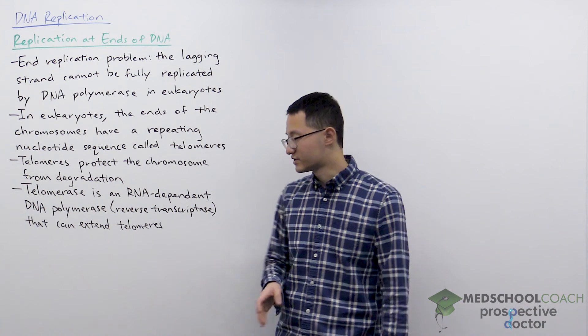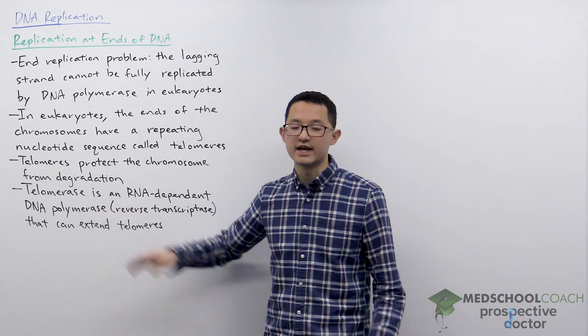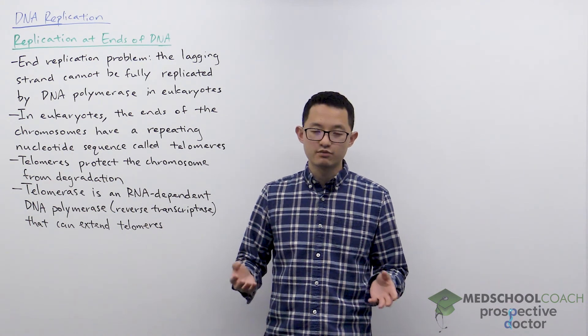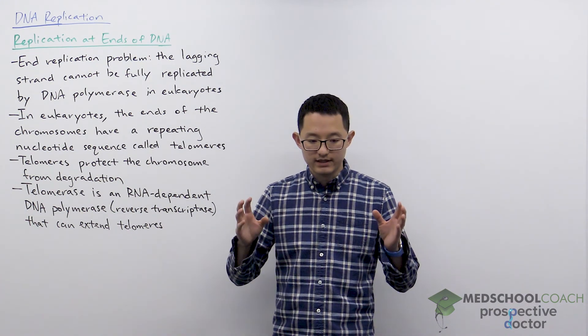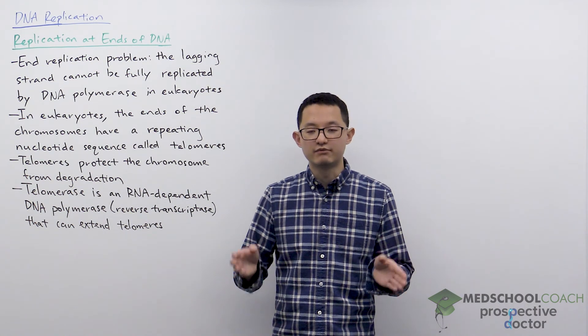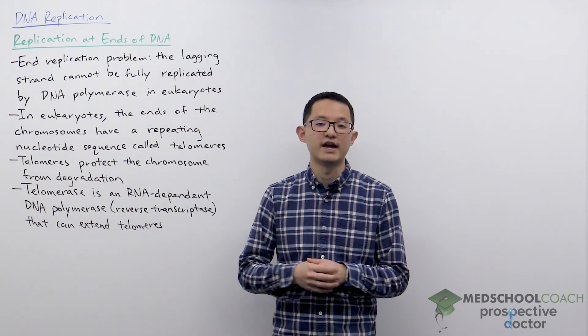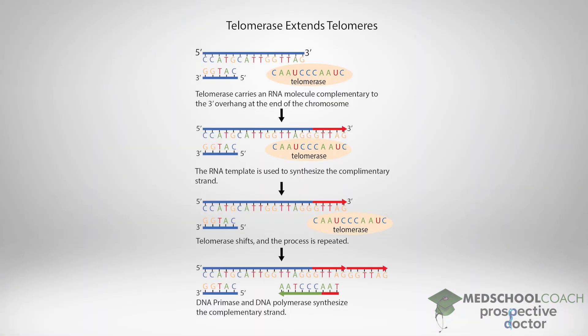In eukaryotes, there is a telomerase enzyme that can help to extend the length of the telomeres, and this is what prevents the chromosomes from getting shorter during every round of DNA replication. Telomerase is what is called an RNA-dependent DNA polymerase, meaning that using an RNA template, it is able to synthesize DNA. And since it is synthesizing DNA from RNA, it is also considered a reverse transcriptase.